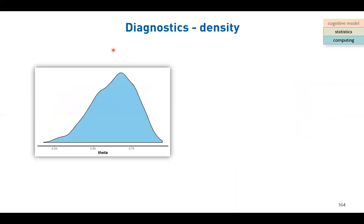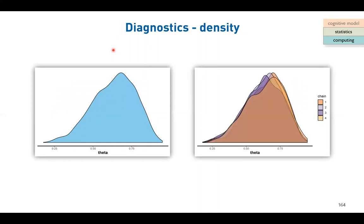Finally, this is the posterior shape of the theta parameter. You can also plot the posterior density per chain. This mixed plot is based on summarizing all 4,000 samples from the chains, while the per-chain plot is based on 1,000 samples separating by chain.